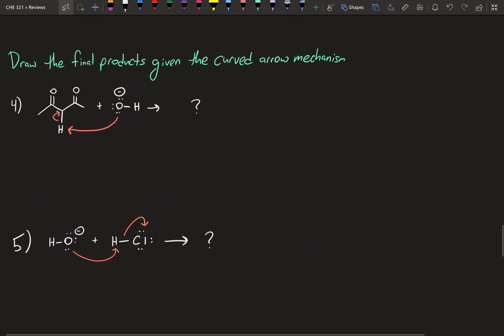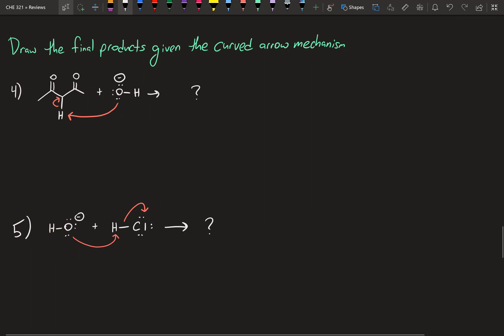Now I'm going to give you the curved arrows and you're going to draw the products — this is pretty common for exam one and beyond, so get comfortable doing both sorts of problems. Generally people find this one easier, but watch out for formal charge because that trips people up. Here we have a hydroxide anion acting as a base, and a weird-looking group with two ketones. The hydroxide anion is attacking that hydrogen, and the electrons in the carbon-hydrogen bond are returning to that carbon.